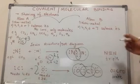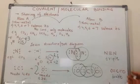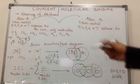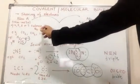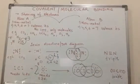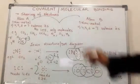There is no transfer of electrons, no loss, no gain. That's why there are no ions in this type of bonding, only molecules.